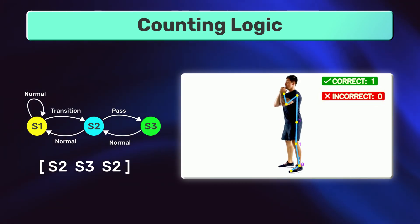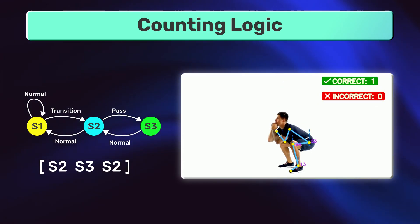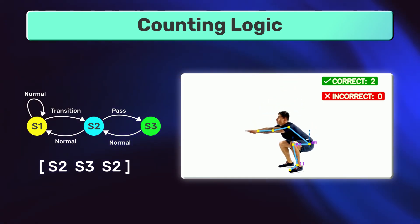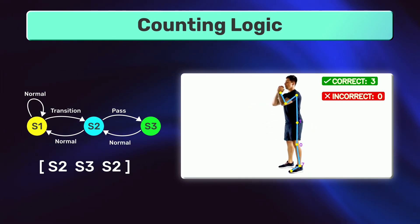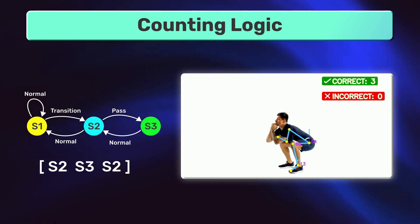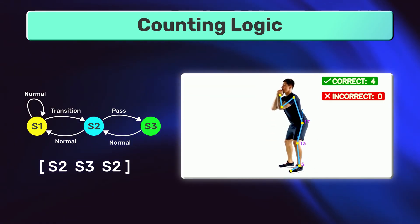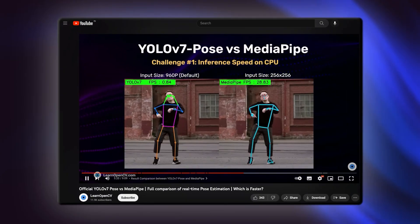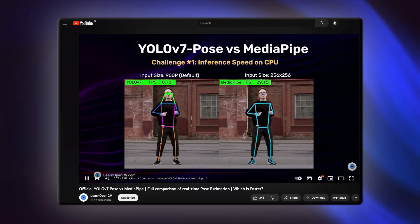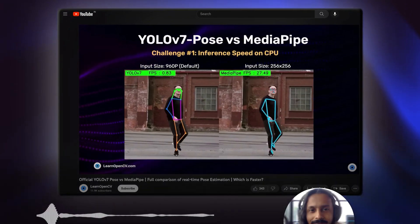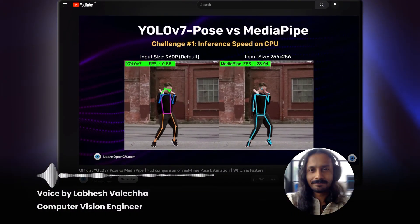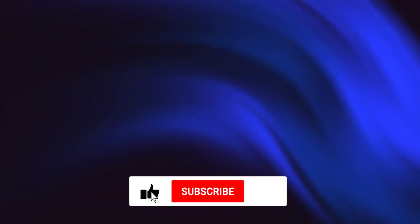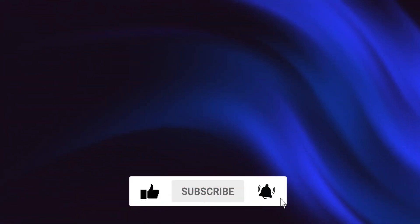So that's how we created the AI Fitness Trainer. Check the link in description to try out the web app for yourself. You can also check out the blog post on AI Fitness Trainer. If you like this video, check out YOLO V7 Pose vs MediaPipe Comparison. Do comment on what you would like to see next, and don't forget to subscribe. Thanks for watching. Until next time.